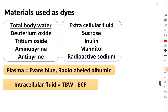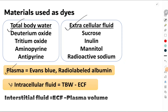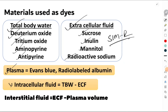We can easily measure three important compartments: total body water, extracellular fluid, and plasma — but we cannot measure intracellular fluid or interstitial fluid directly. For total body water, we use deuterium oxide, tritium oxide, aminopyrin, and antipyrin. To measure extracellular fluid, we use sucrose, inulin, mannitol, and radioactive sodium.